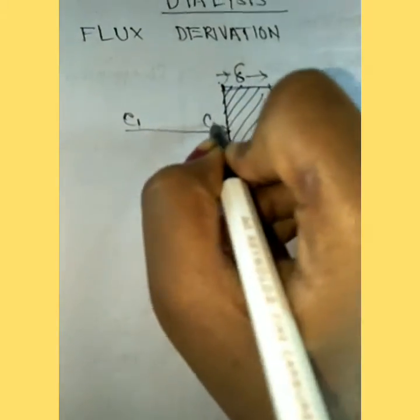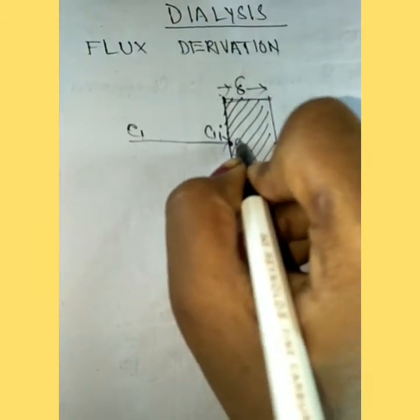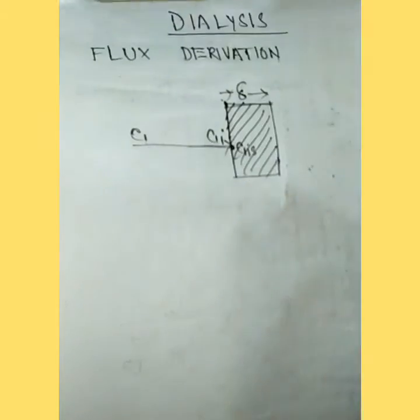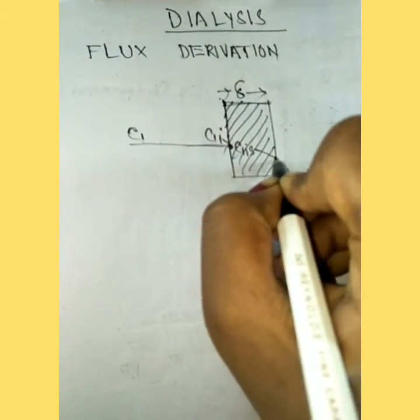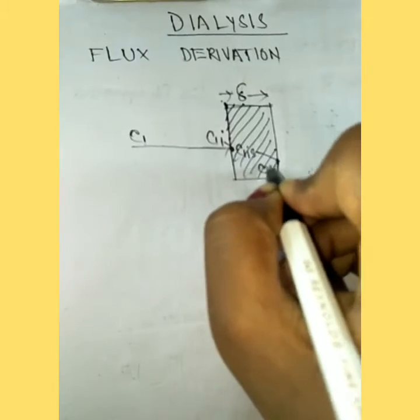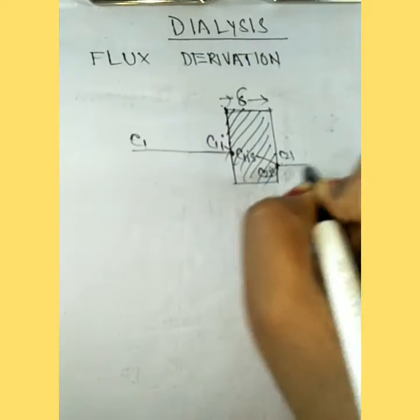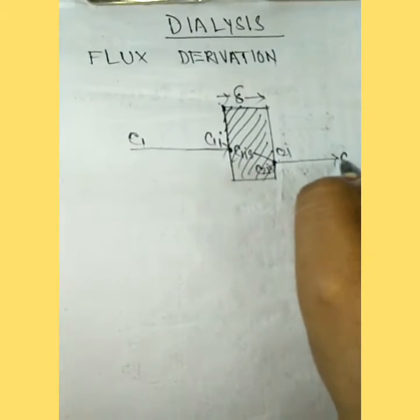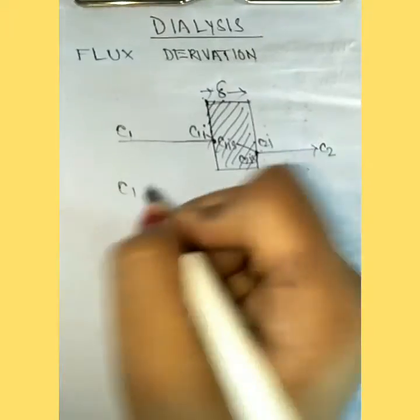When this liquid comes here, the concentration is C1I. The concentration of solute in the solid is C1S. Then they go here where C2I is present, and the outgoing concentration of liquid is C2.